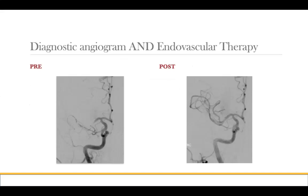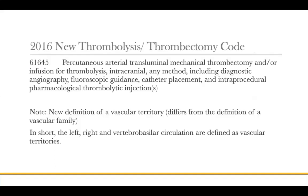Just to show a picture — this is before and after. These are very gratifying procedures. The entire work here is described by CPT code 61645, which is the percutaneous arterial transluminal mechanical thrombectomy and/or infusion for thrombolysis, intracranial, by any method, including diagnostic work and interprocedural thrombolytic injection. The keyword here is that any method is summarized under this code.